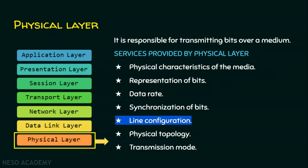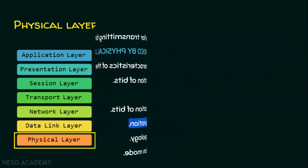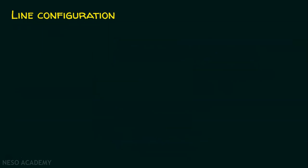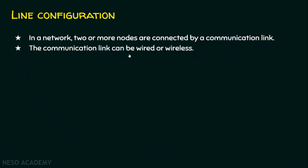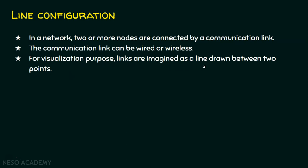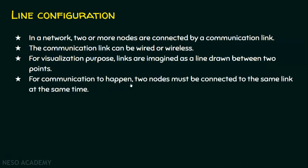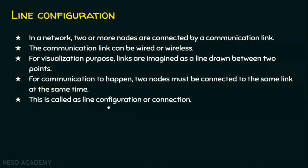The topic of the session is line configuration. In any network, there are a set of devices or nodes connected by links. Two or more nodes are connected by a communication link, which can be wired or wireless. The links are visualized as a line drawn between two points. For communication to happen, these two nodes must be connected to the same link at the same time. This is what line configuration is — it is also called a connection.